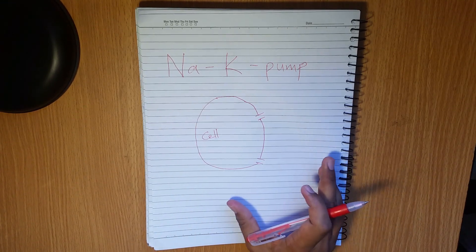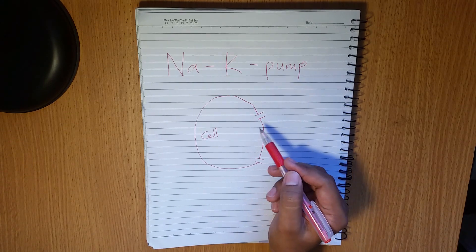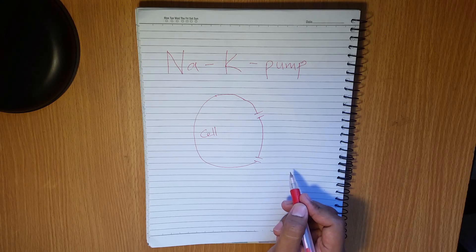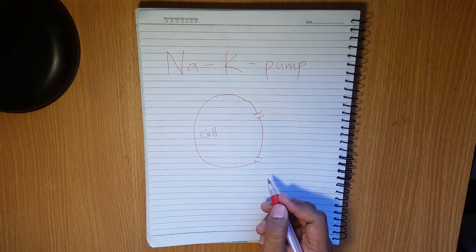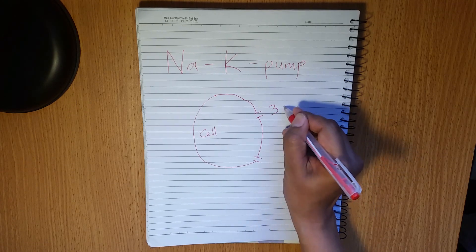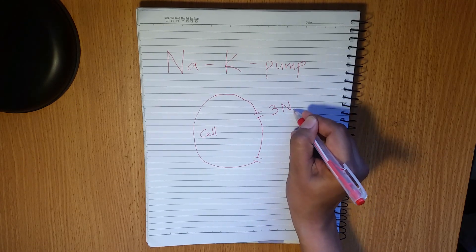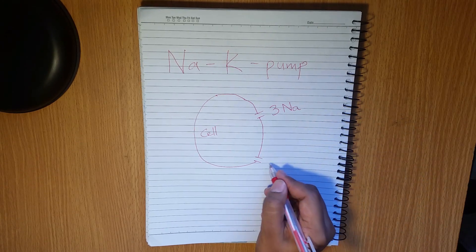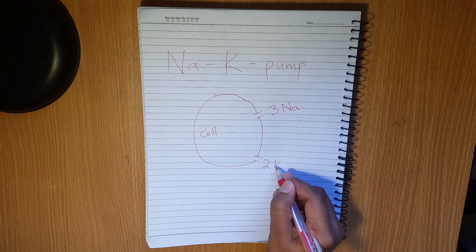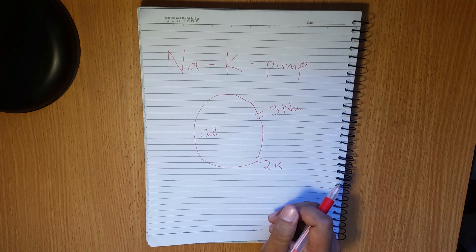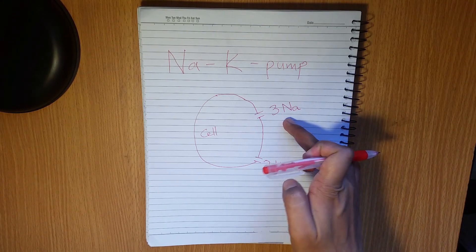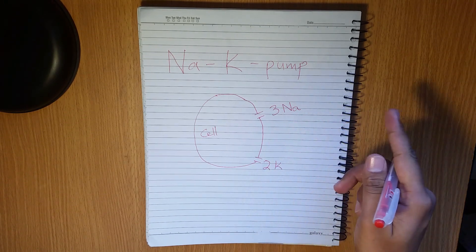You know that in the sodium-potassium pump, sodium moves out of the cell and potassium moves into the cell. In the sodium-potassium pump there are three sodium which move out of the cell and two potassium which move into the cell. Students often feel difficulty in remembering how many sodium moves out and how many potassium moves in.